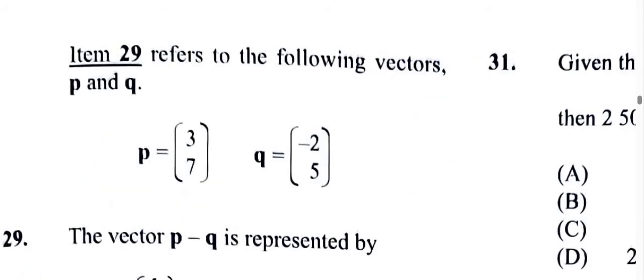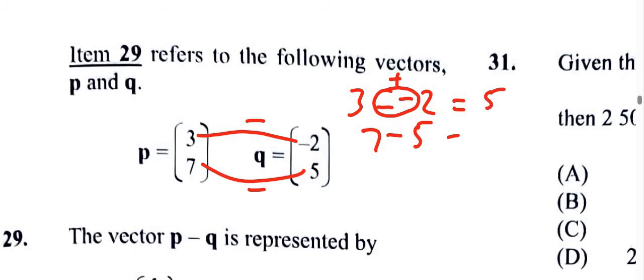Question 29: we have to subtract vectors P and Q. P minus Q is 3 minus negative 2, and then 7 minus 5. Subtracting negative 2 becomes a positive—subtracting a negative is a positive—so it's 3 plus 2, and then 7 minus 5. This gives us 5, and this gives us 2. So we have 5 and 2 as the components.